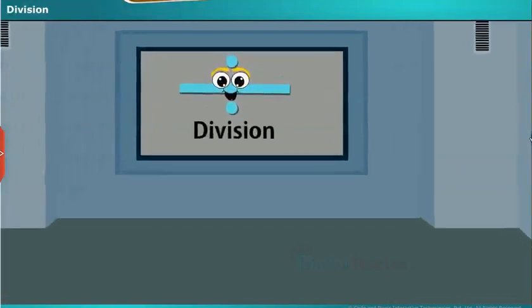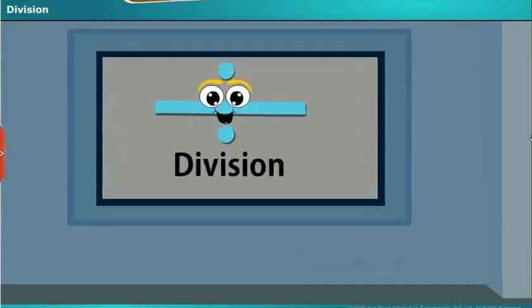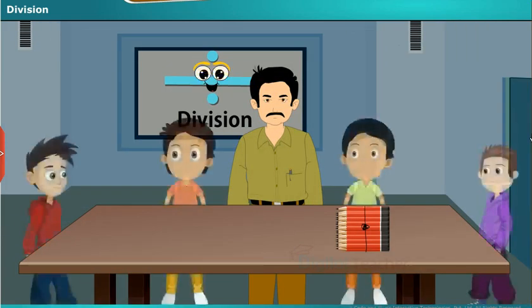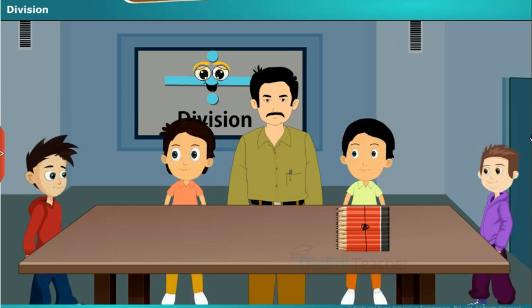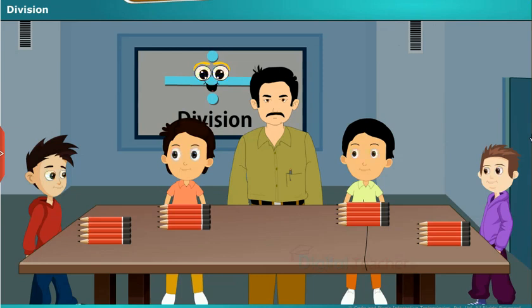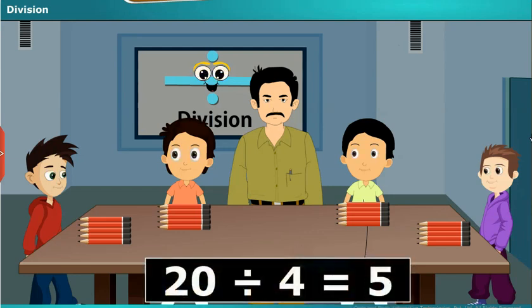Let us see another example for equal sharing, that is division. Suppose Ramu brought 20 pencils for his four kids and asked them to share equally. How did they share and how many pencils did each of them get? Kid 1 started distributing the pencils one after the other to each of them. Finally, each of them got 5 pencils. By doing this, it will take more time. In the simplest way, we can divide 20 by 4 and the result is 5. Each of them will get 5 pencils.